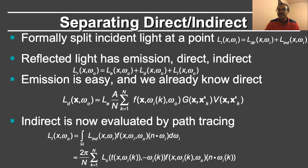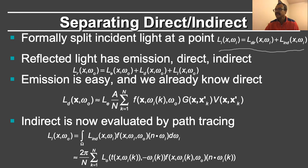Formally, we want to split the incident light at a point. Looking at the equation here, I have split it into the direct light at a point and the indirect light at a point. The reflected light now has three components: the emission, the direct component, and the indirect component.